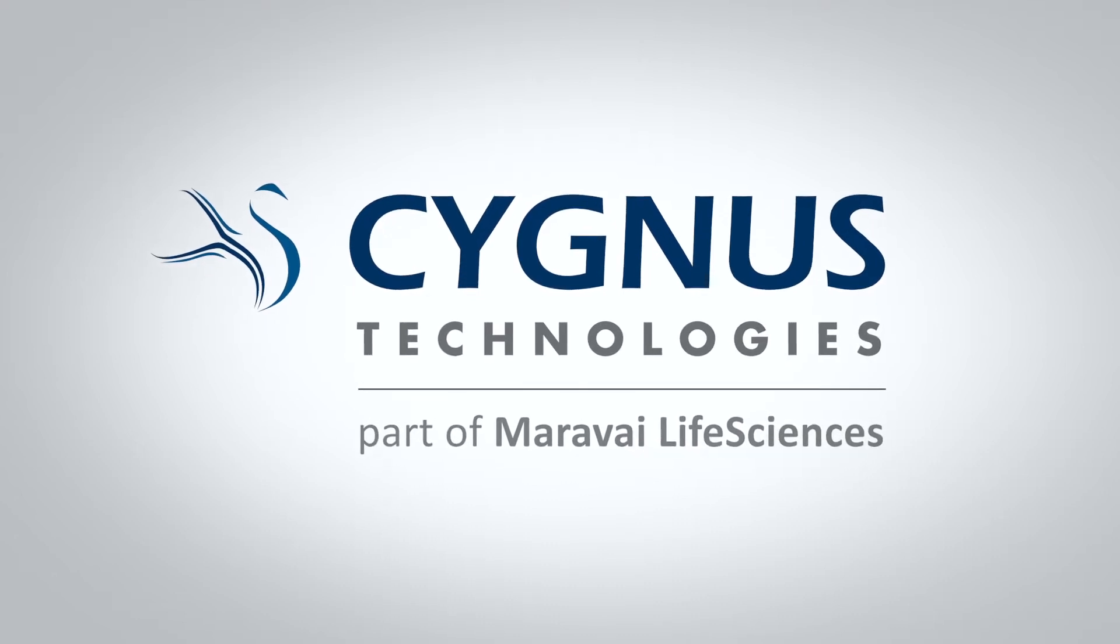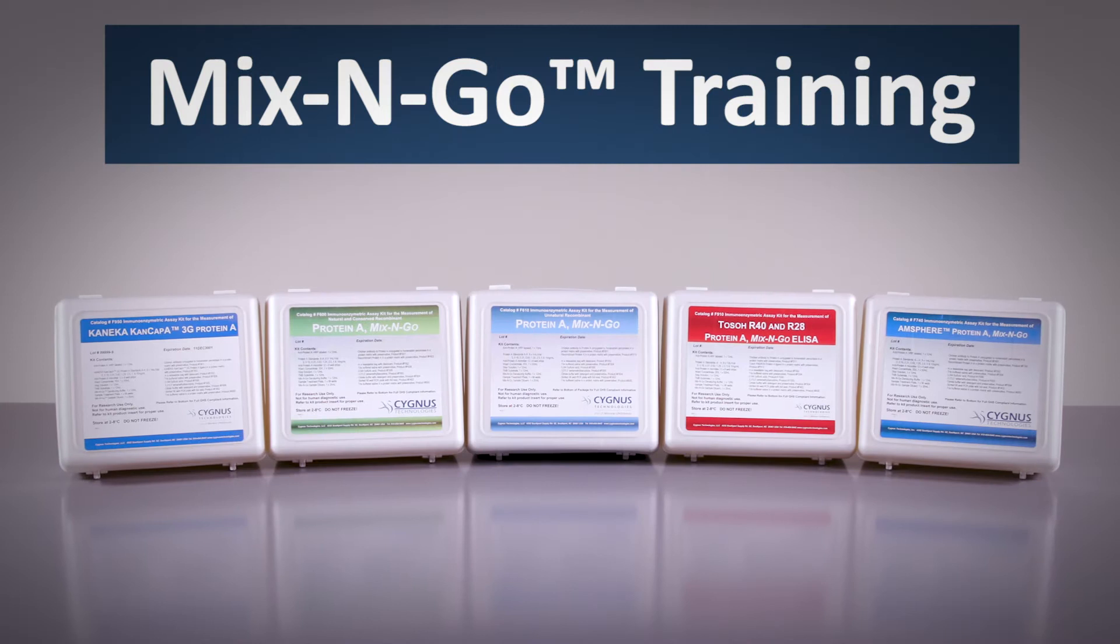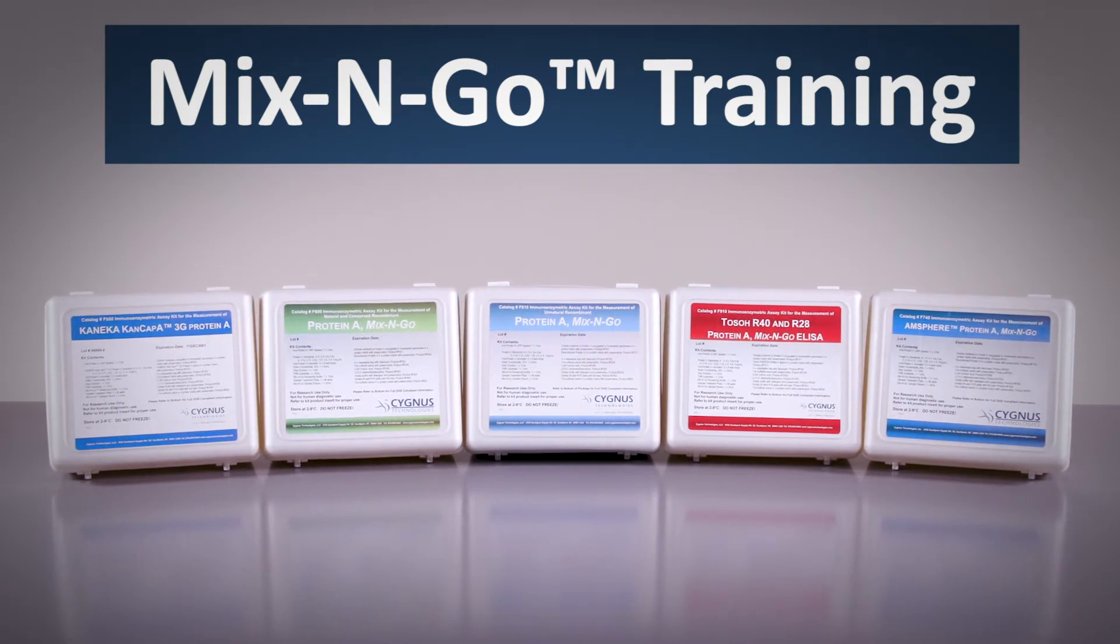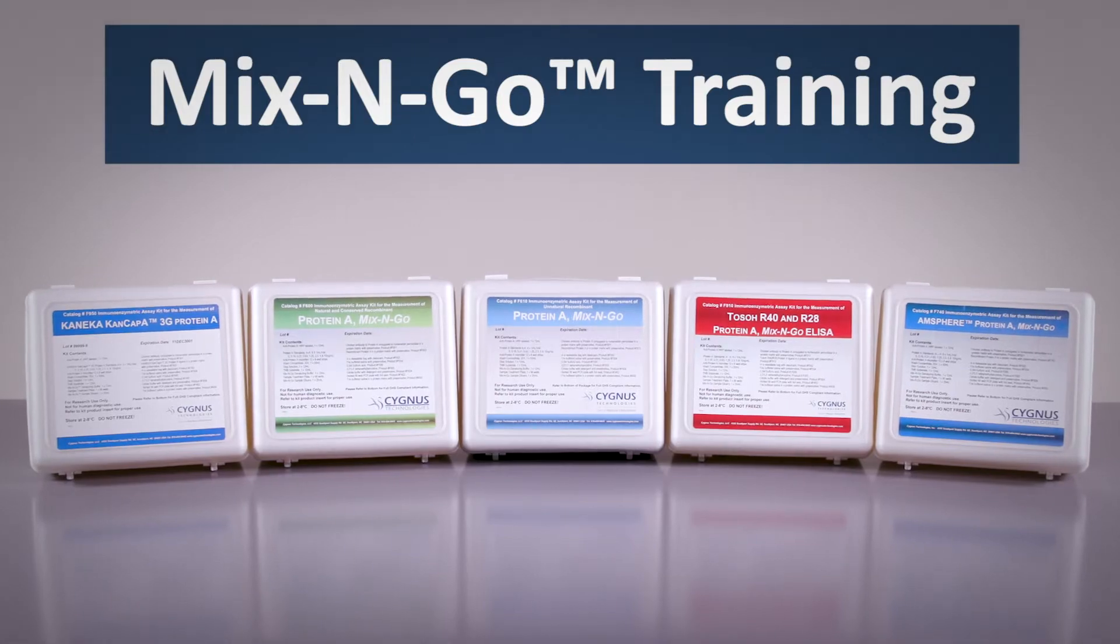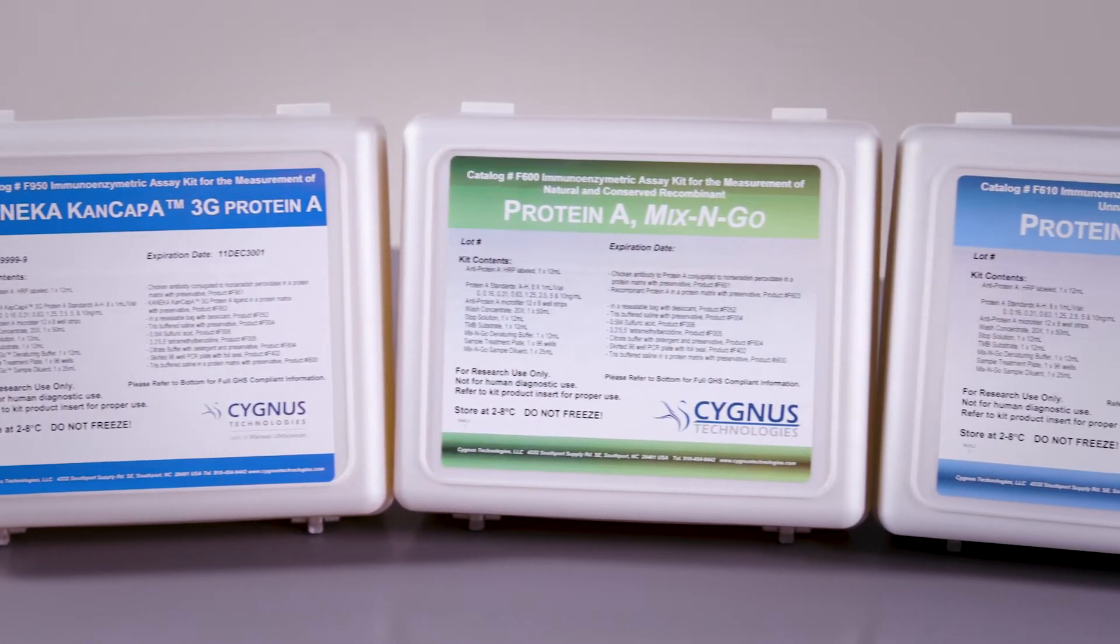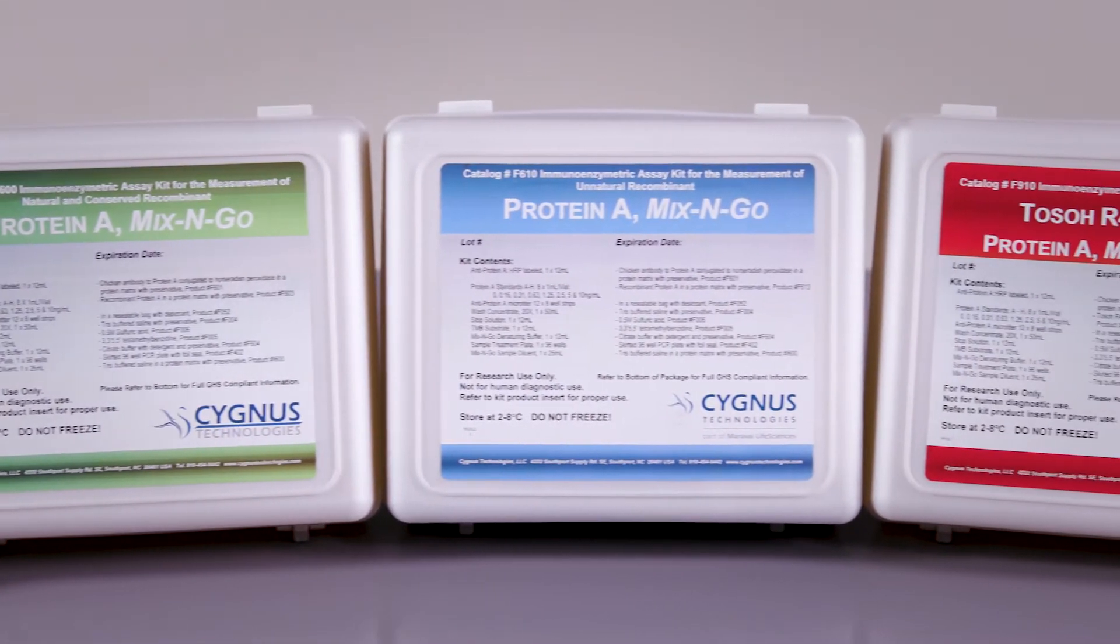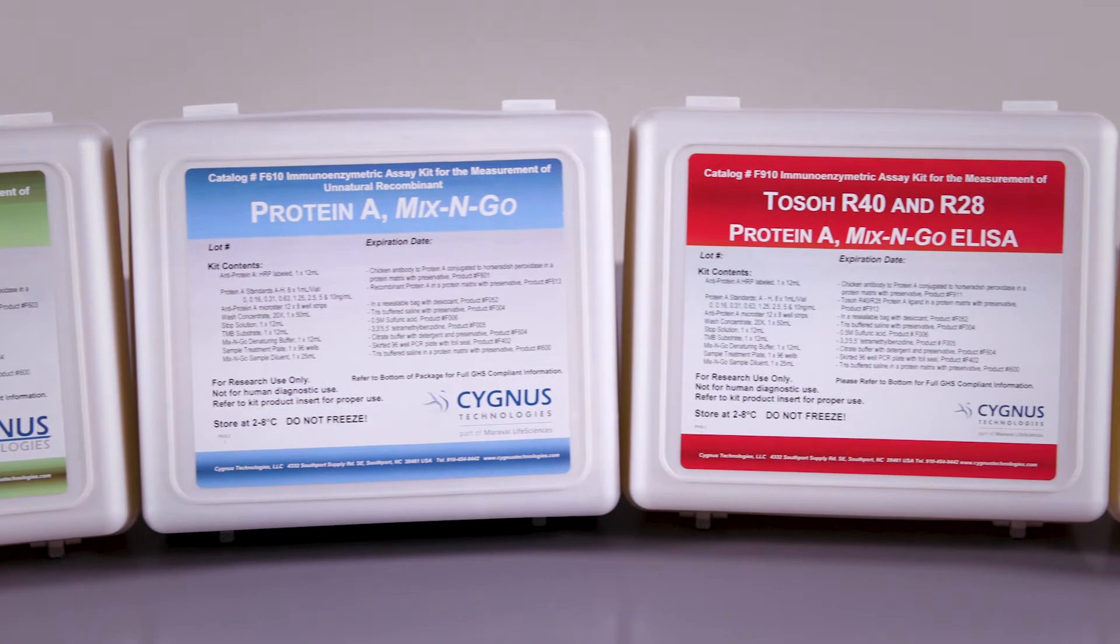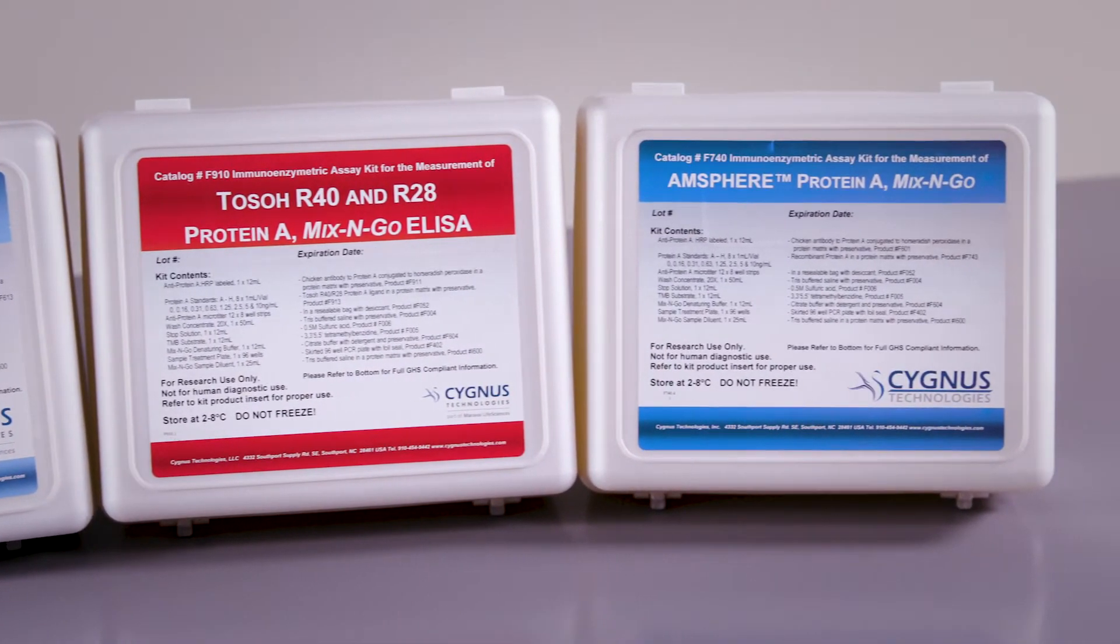Mix & Go ELISA kits are designed to perform with most natural and recombinant protein A constructs and incorporate the revolutionary single-step sample treatment procedure. These Cygnus Technologies kits also reduce the complexity of the assay, as well as time to result.